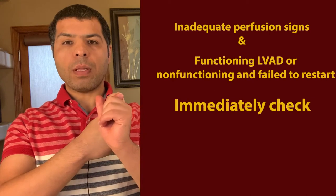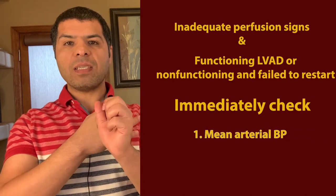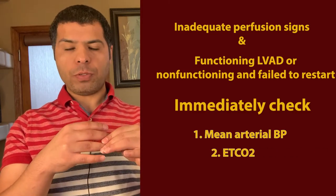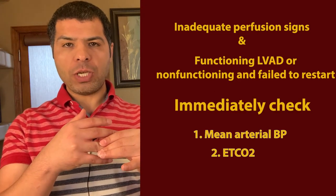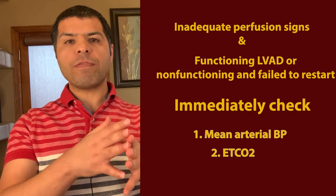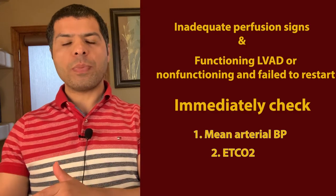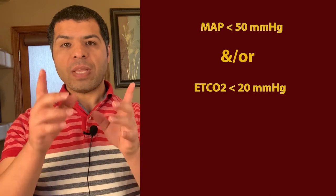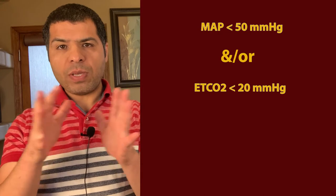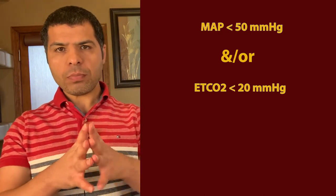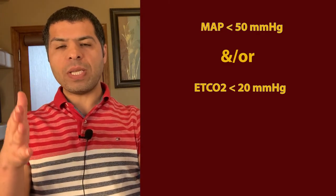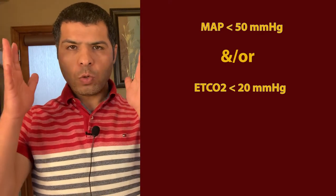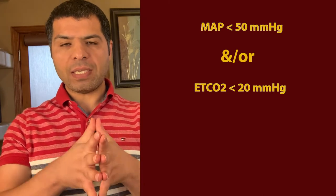Check the mean arterial blood pressure and the end-tidal CO2 with capnography. If the MAP is above 50 mmHg and/or the end-tidal CO2 is above 20 mmHg, there is still no need to do CPR — just follow the ACLS protocol. We're trying to avoid CPR as much as we can. But if the MAP is less than 50 mmHg and/or the end-tidal CO2 is less than 20 mmHg — and if the patient is intubated, make sure it was correctly intubated for end-tidal CO2 to be reliable — then we have really no other option except to go ahead and do CPR and chest compressions, accepting the risk of dislodging the LVAD machine.